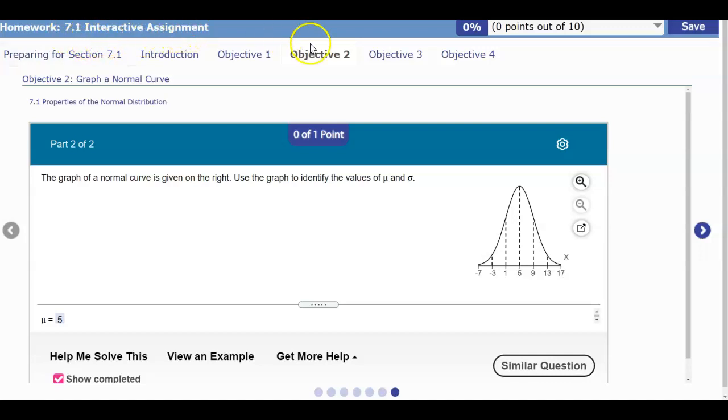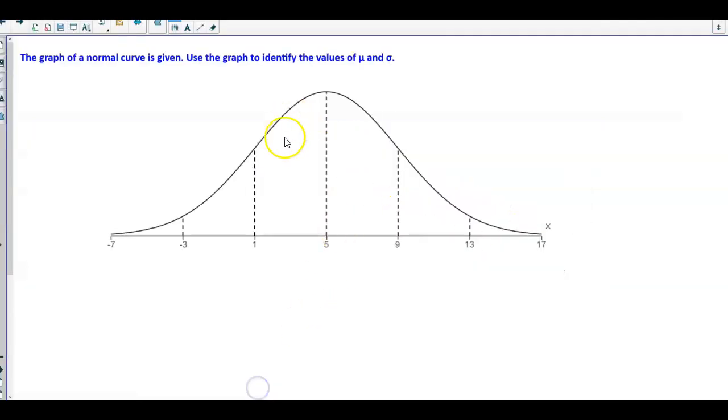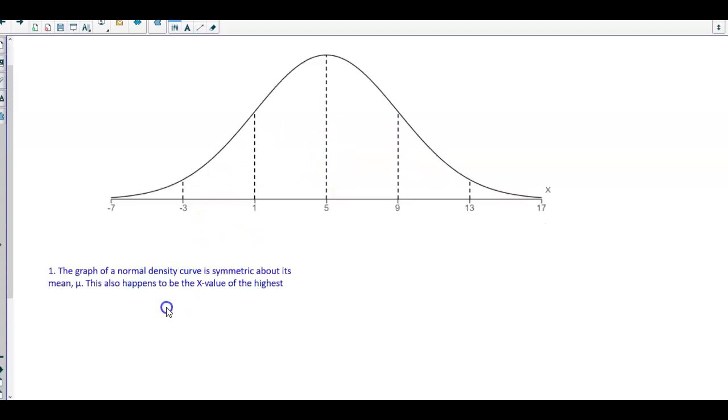Section 7.1 Interactive Assignment, Objective 2. The graph of a normal curve is given on the right, and we're going to use the graph to identify the values of the mean and the standard deviation. So here's our graph and you can see this below. The first thing we need to talk about is the following.